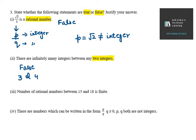This is false. Third: the number of rational numbers between 15 and 18 is finite. They are saying that the rational numbers between 15 and 18 can be counted. But that is not the case — between any two rational numbers there are infinite rational numbers. You cannot count them. So this is false.